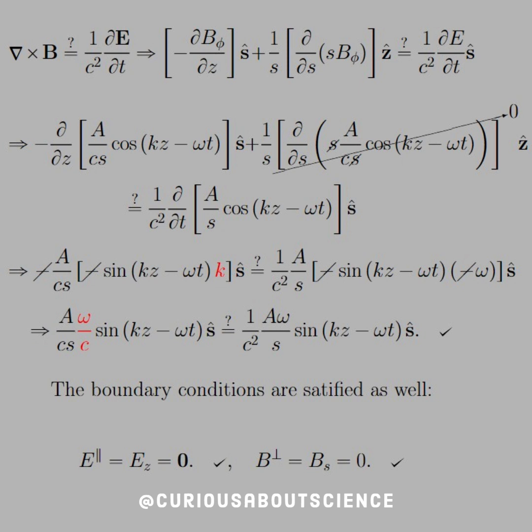Now, does the curl of B equal 1 over C squared D by DT of E? Well, same thing. We'll write out the curl components and see if it is equal to the time derivative component of the E, which is in the S hat.